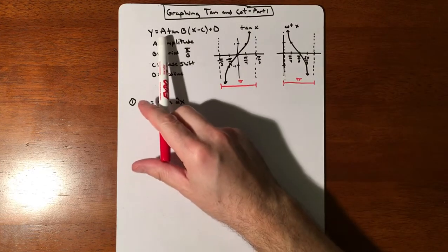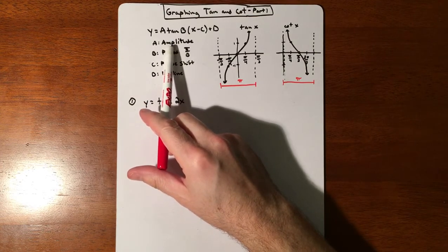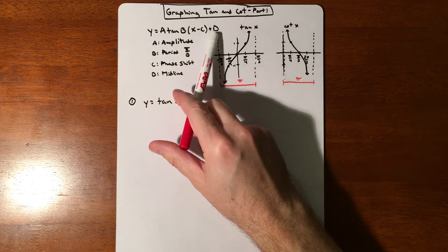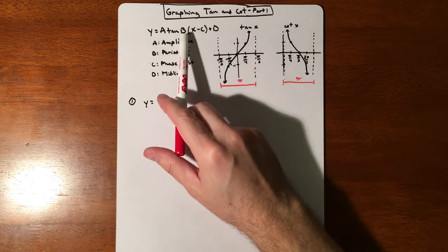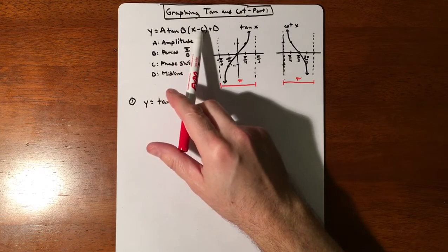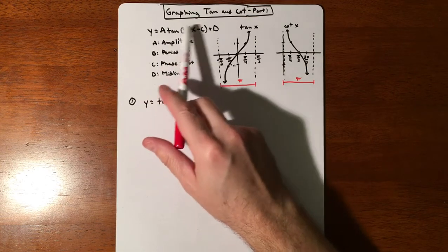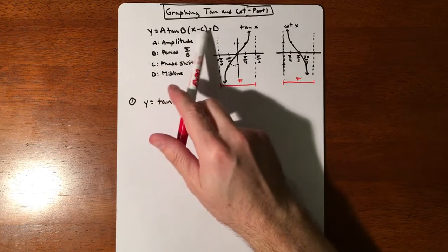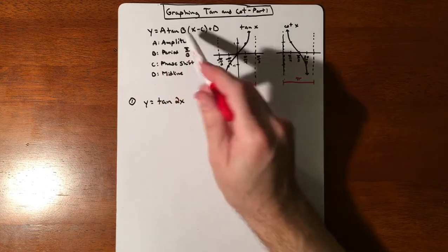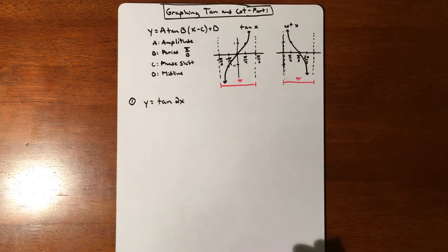But it still has a value that's going to vertically stretch it, which I'll cheat a little bit and call it an amplitude. We still have a vertical shift, which I kind of cheat and call a midline. The period is still affected by b, and the phase shift still shifts it left and right. Anything on the outside vertically affects your graph; anything on the inside horizontally affects your graph. Some of the language is not exactly true, but keeping it consistent with sines and cosines helps.